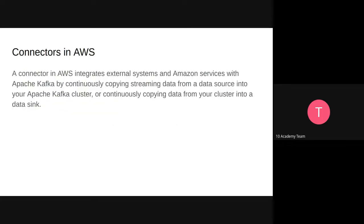In AWS, we can use Kafka Connectors. The way we insert and ingest data from Kafka is by using connectors, which are available locally, in a Docker environment, or on different cloud environments. Since we're using AWS managed service for Kafka deployment, we also have different connectors available in AWS. A connector in AWS integrates external systems and Amazon services with Apache Kafka by continuously copying data from a source into an Apache Kafka cluster, or continuously copying data from the cluster into a data sink.